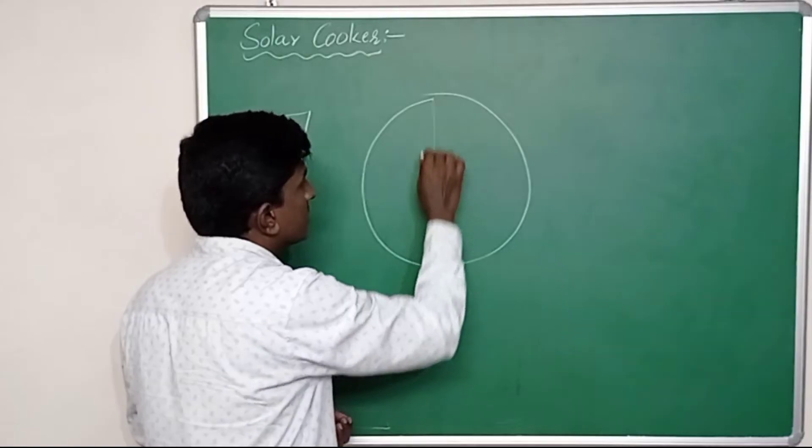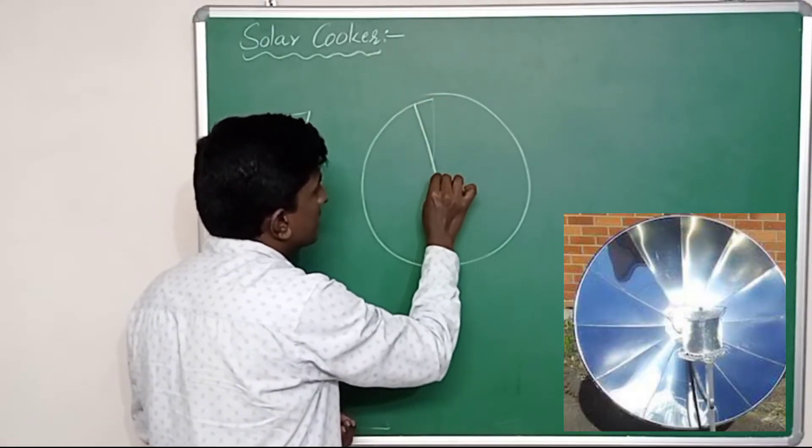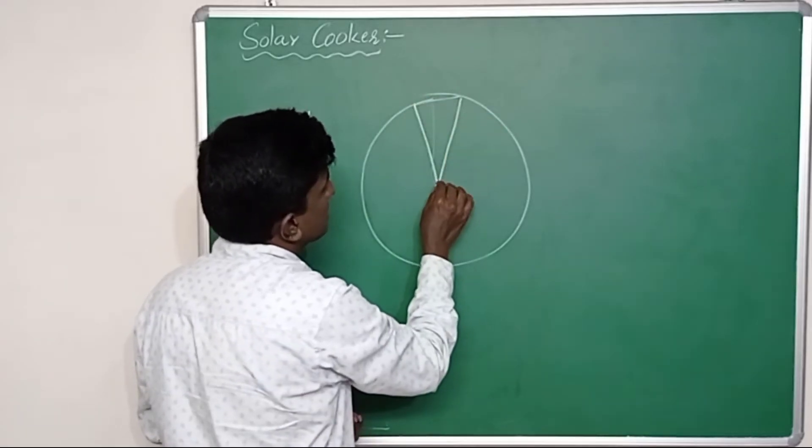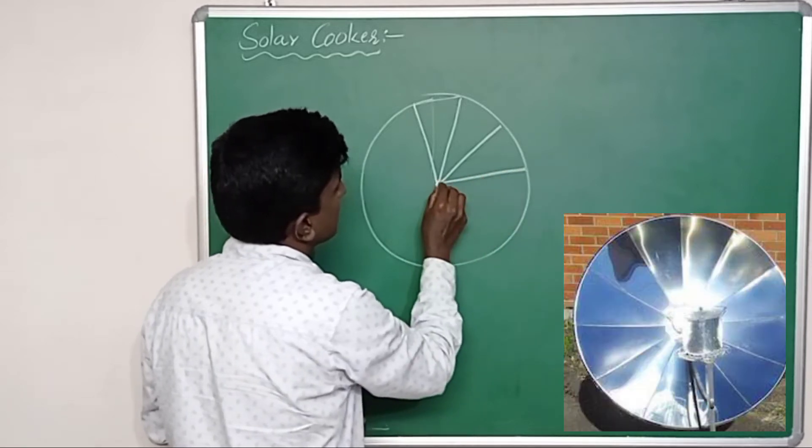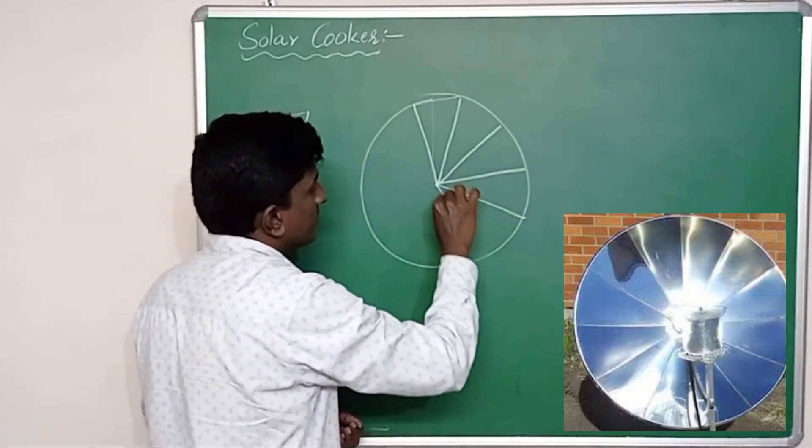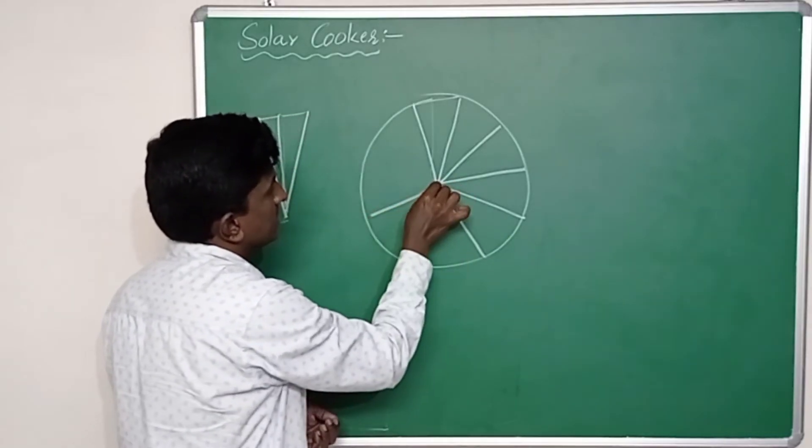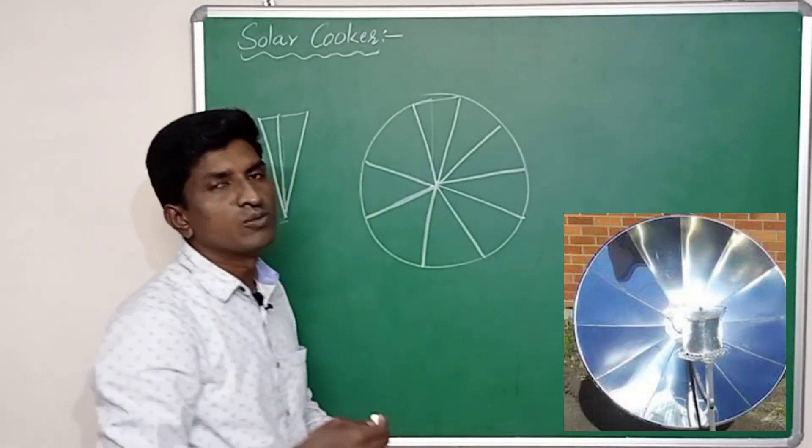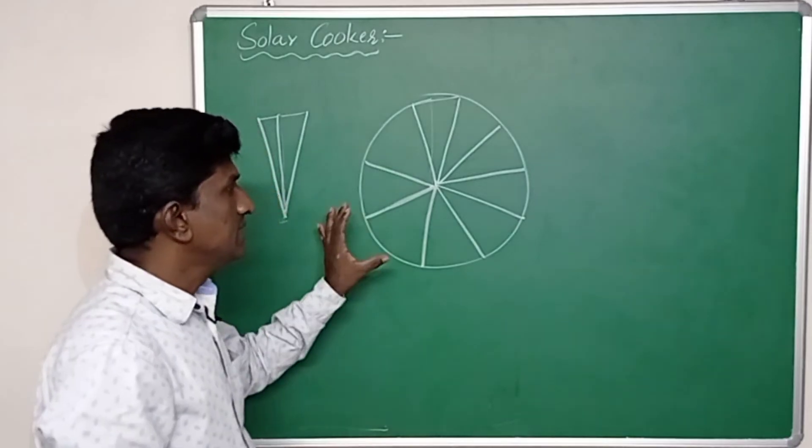Now take these triangles and arrange them inside the concave surface like this: the first one, the second triangle, the third triangle, fourth triangle, fifth, sixth, seventh, eighth, and so on. If you want more triangles, you can take more.